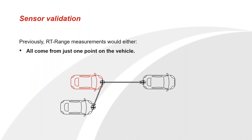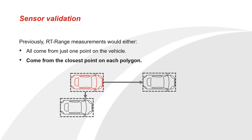To start off with, RT Range measurements initially - you could only get RT Range measurements from one point on the hunter vehicle, and they'd be relative to one particular point on the target vehicle. This is how the earliest versions of RT Range worked. You could configure that point to be anywhere on the hunter vehicle, but there would just be one location and all your measurements would come from that point. Later on, we introduced a feature called polygons, where you're able to create a 2D profile of the perimeter of your vehicle, and then your measurements would come from the closest point on one polygon to the closest point of another.